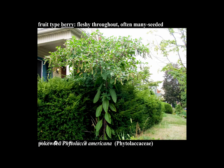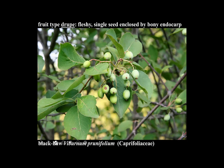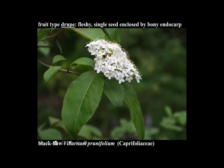Drupes are really common. Most people look at drupes and say they're berries; you really can't tell until you split it open or cut it with a razor and discover there's a stone inside — a single seed surrounded by a bony endocarp. This is Viburnum prunifolium, black haw. It's got a drupe. Here is black haw in fruit and here's black haw in flower. It's blooming right now, May 21st, in the woods around us.